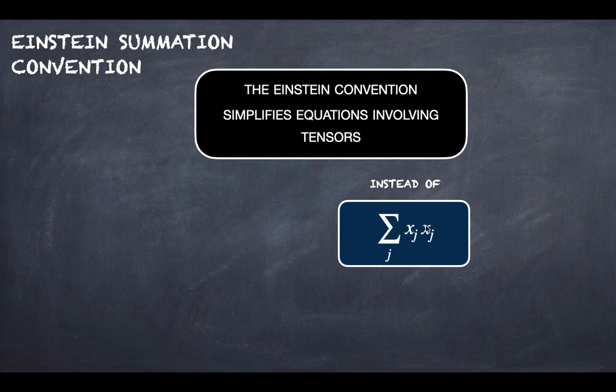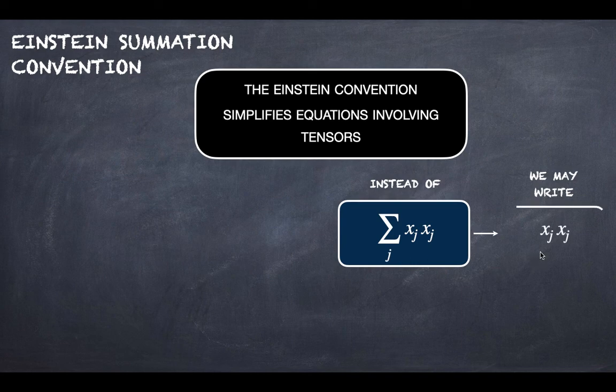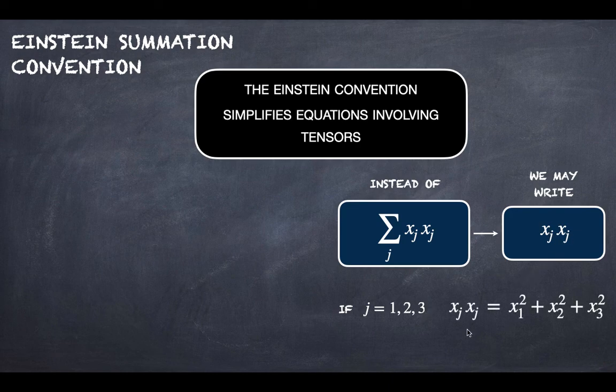of xⱼxⱼ, the summation on this index j, instead of that we may write xⱼxⱼ only without the summation symbol. And in case j equals 1, 2, 3, then xⱼxⱼ is x₁² + x₂² + x₃². So there is a summation we have to consider.